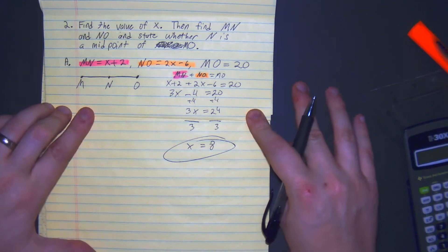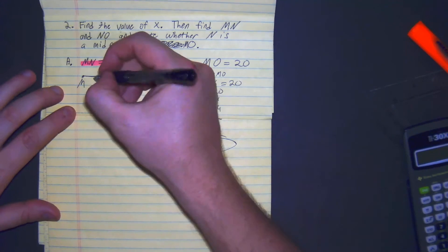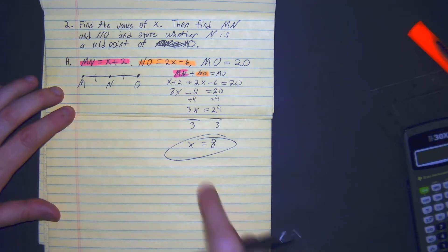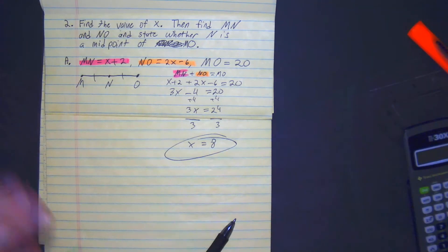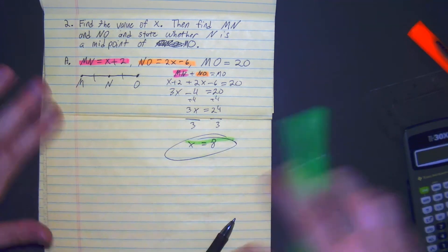So how do we determine if it's a midpoint? Well, if it's a midpoint, or assuming it is, then that means MN has to equal NO using this value of x. So I'm going to set those equal.